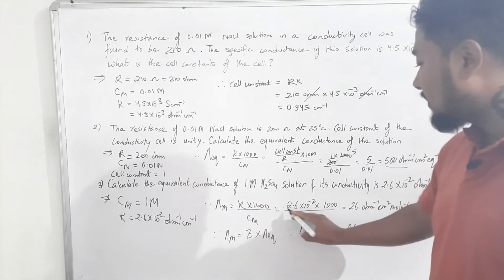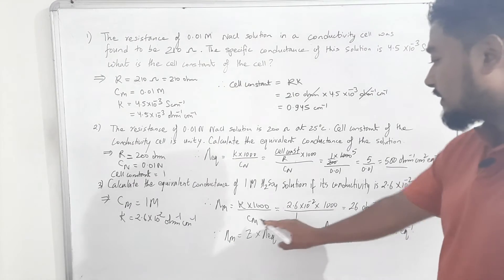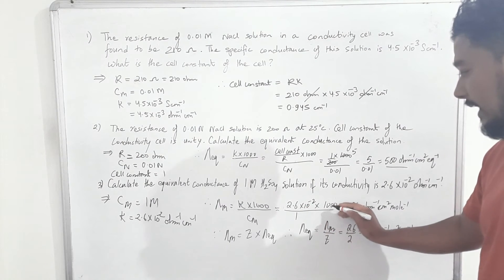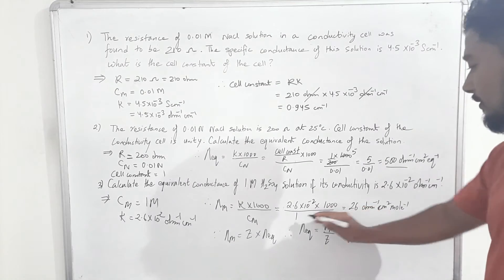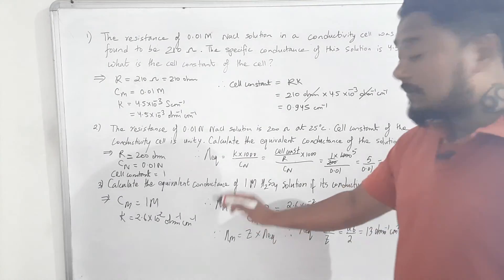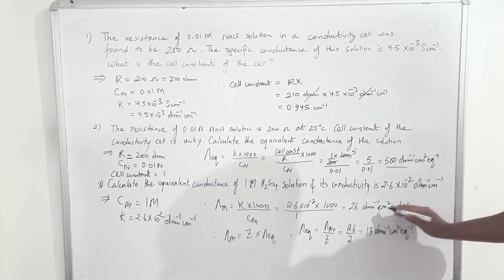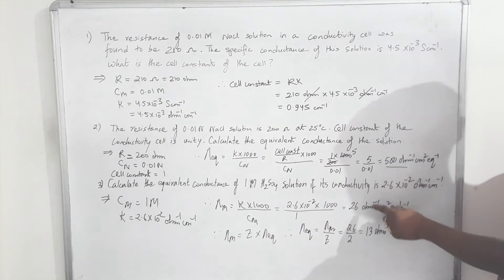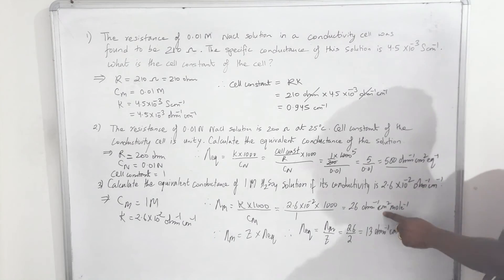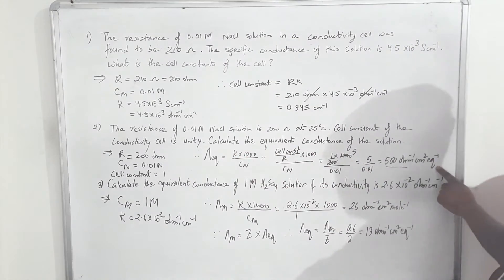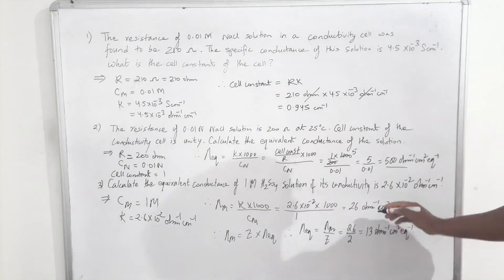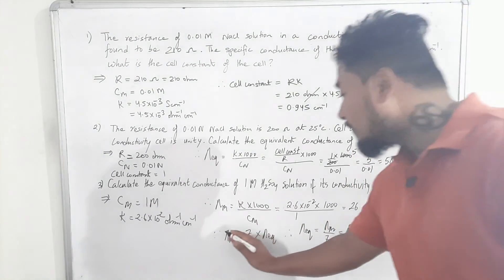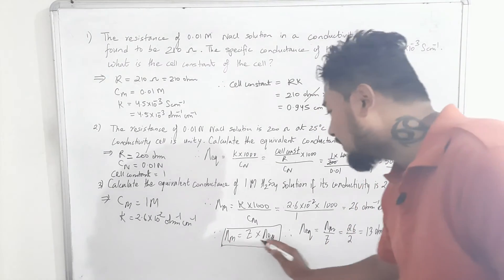Substituting: κ = 2.6×10⁻², × 1000, / CM = 1. The 10⁻² and two zeros cancel leaving 10, so 10 × 2.6 = 26. Therefore λm = 26 Ω⁻¹ cm² mol⁻¹. The unit of λm is Ω⁻¹ cm² mol⁻¹. Now I'll use the relation between λm and λeq to find equivalent conductance as the question requires.